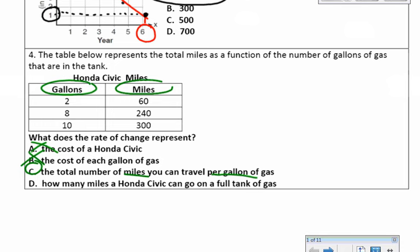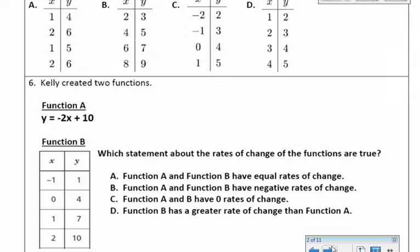Choice D says how many miles a Honda Civic can go on a full tank of gas — that doesn't work either. C is the best choice for number 4. Number 5: which table represents a relationship that is not a function? Go through each choice. If the x repeats, it is not a function. In choice A, the 1 repeats and the 2 repeats, so choice A is not a function. Choices B, C, and D are all functions because all of the x values are different and don't repeat.